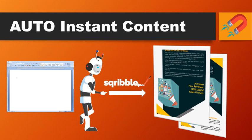This is a massive feature of Scribble. Scribble will allow you to populate your entire e-book with automatic instant content. This is the big one. They've got an incredible content engine — with just a few clicks it's going to fill out your entire e-book.